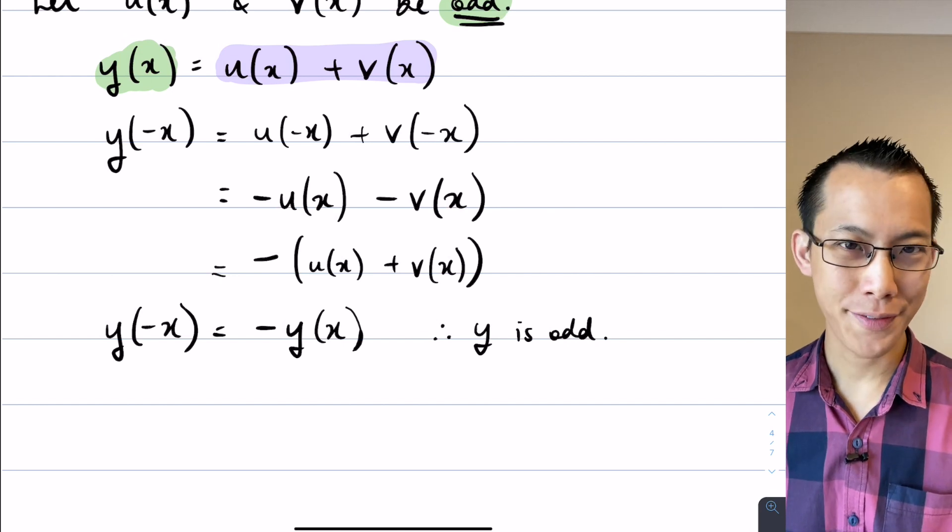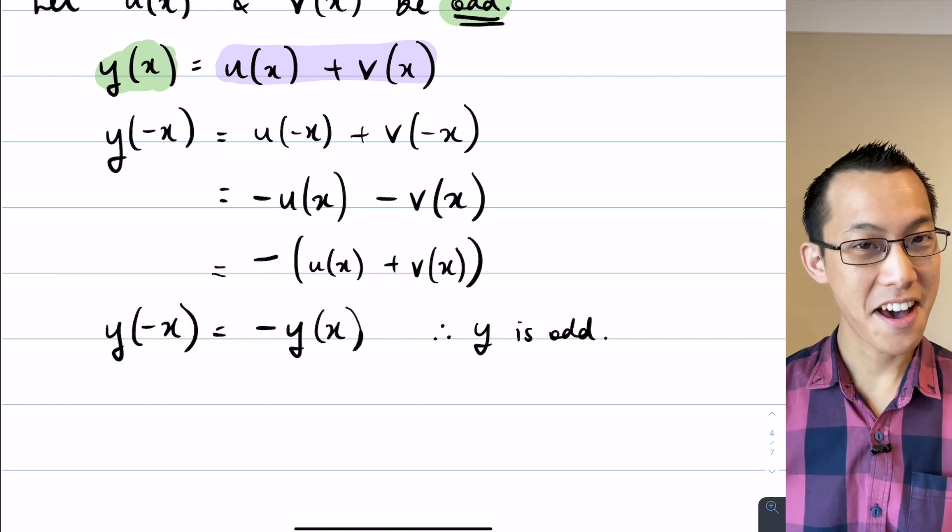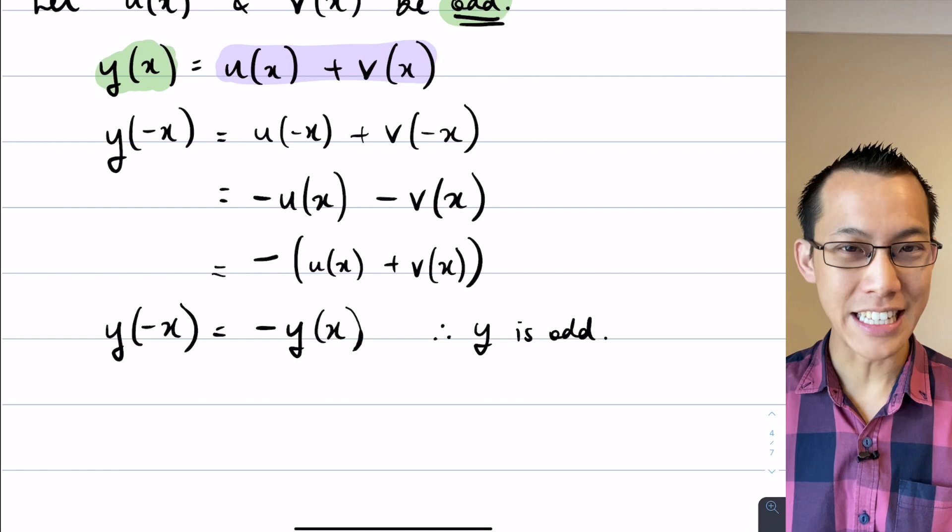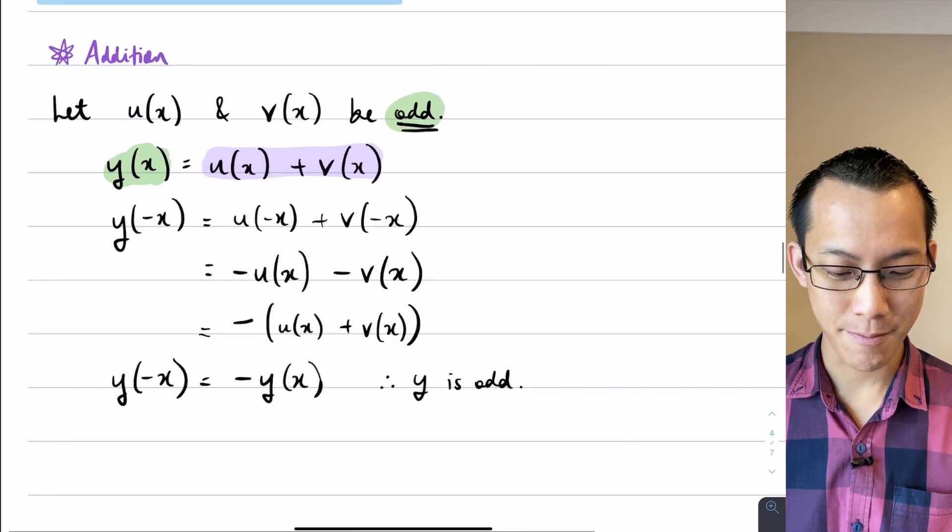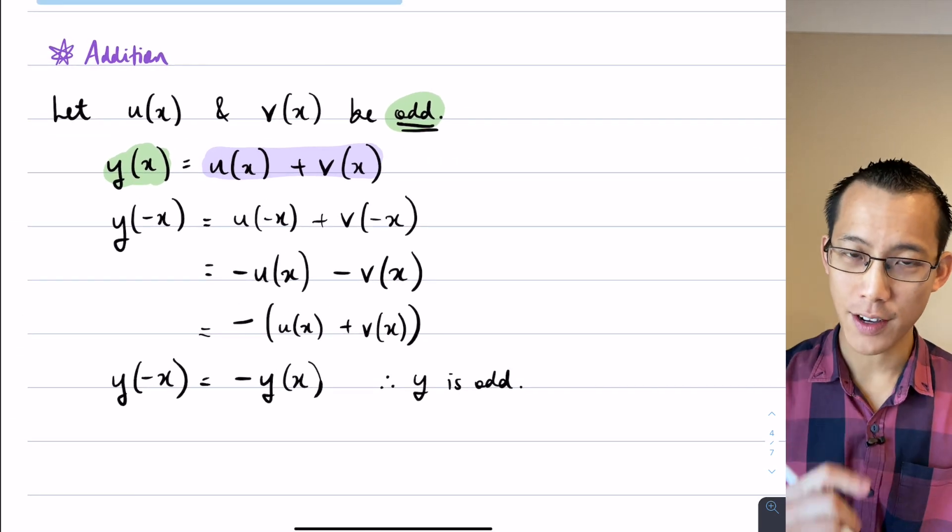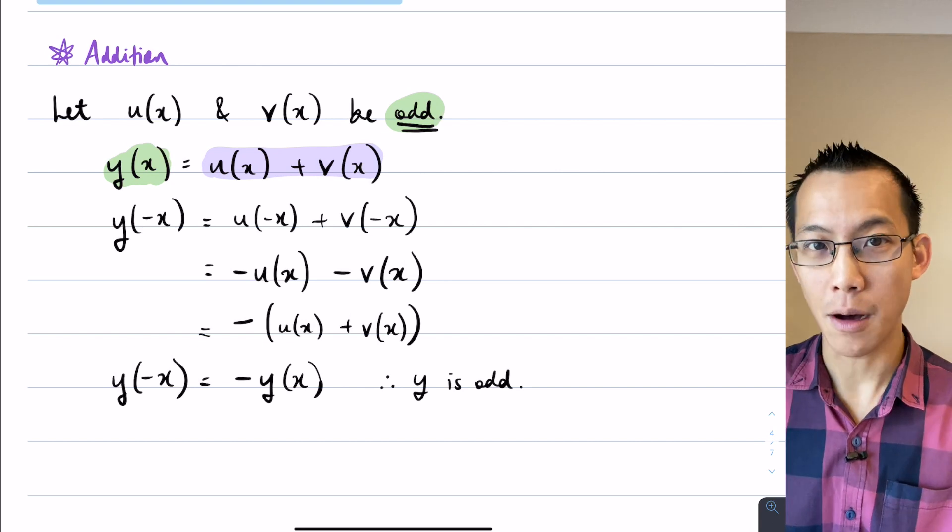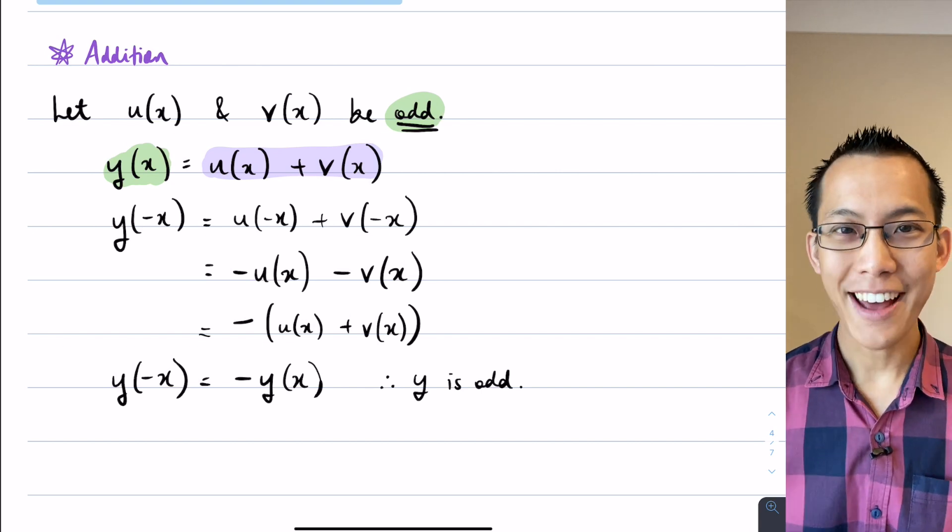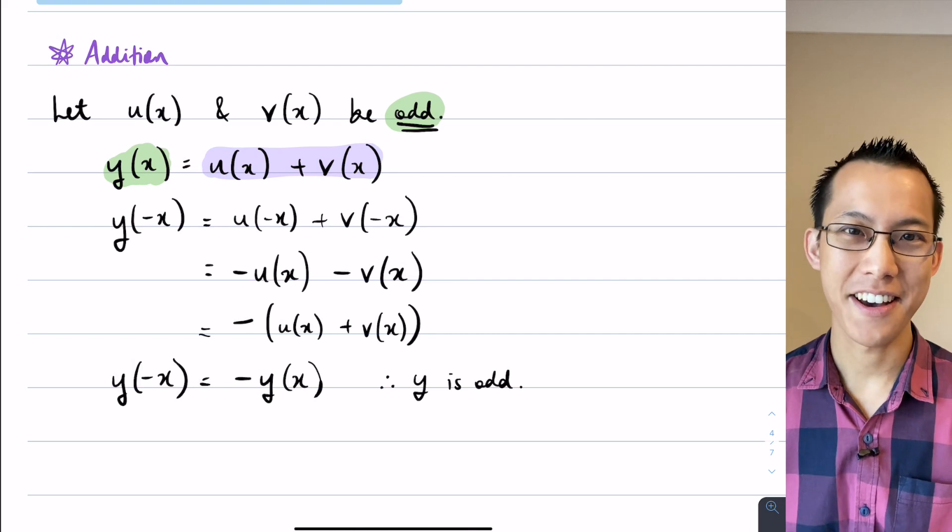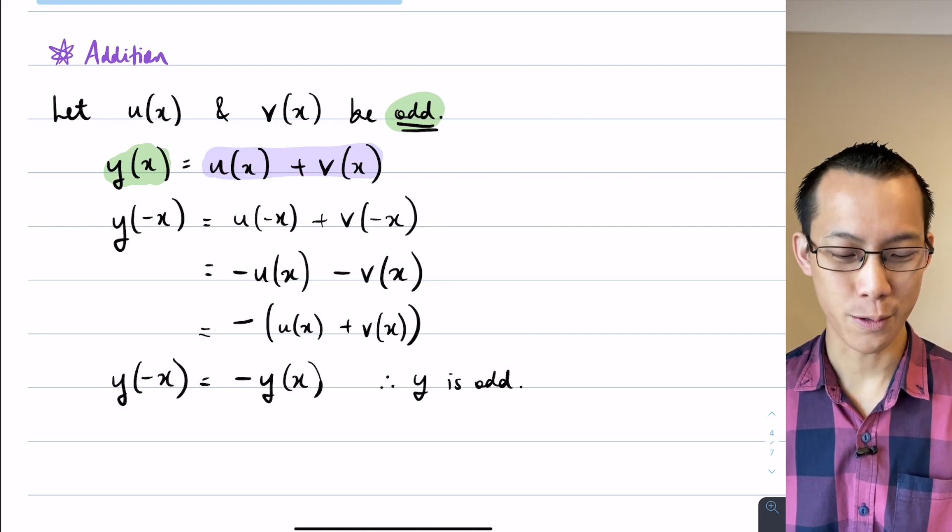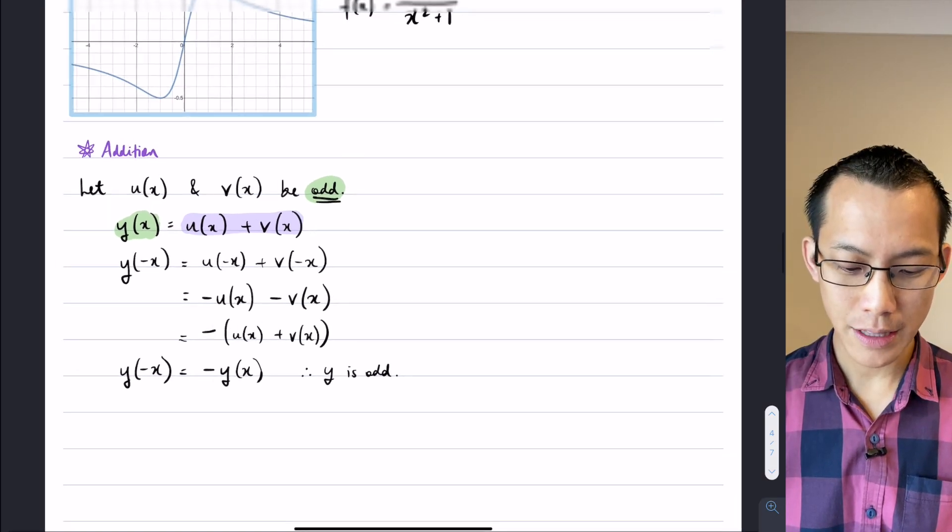If you add together two odd functions, you will get another odd function. And again I'll leave it to you to try and prove if you have two even functions that you start with or any number like I could have five or six or seven. If you add up a bunch of even functions, you'll get another even function as a total. Okay so that's to do with addition.